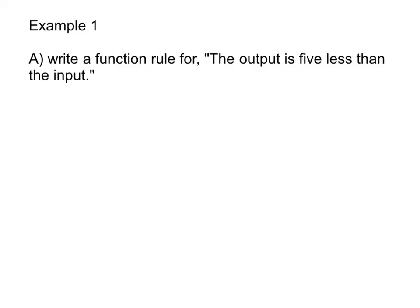Example 1. Write a function rule for the phrase: the output is 5 less than the input. Let's look at what we have for words. The output - we're going to start with the output. We have to write this as a function rule. Remember, a function rule is just an equation. The output, well, that's going to be y. Output is always y.